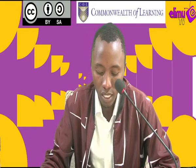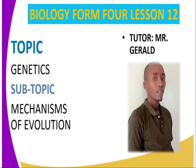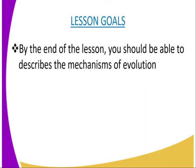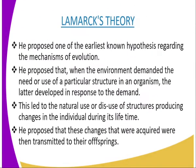Several theories have been formulated to explain how evolution may have occurred. Among these theories are those proposed by Jean-Baptiste Lamarck in 1809 and also Charles Darwin in the year 1859. By the end of the lesson, you should be able to describe the mechanisms of evolution.